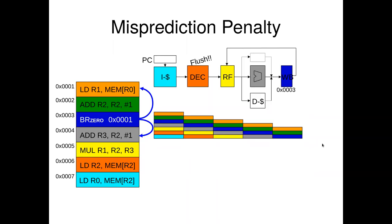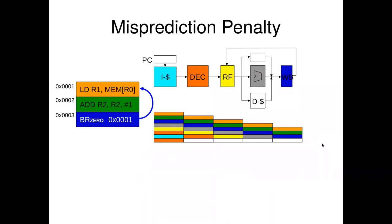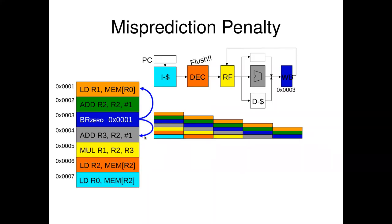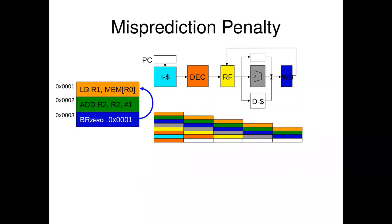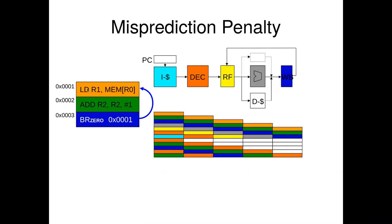The problem is what happens if you were wrong — this is where we ended last time. If we're wrong about our prediction, we have to flush the pipeline and start all over. We pulled in the add instruction, the multiply instruction, and two load instructions and started executing them, then found out the branch was taken and we actually had to go back to a different instruction. So we flush the pipeline, get rid of everything, and start over.